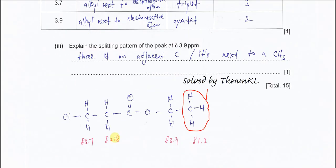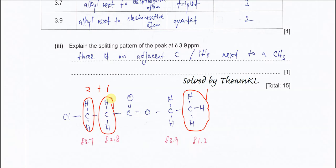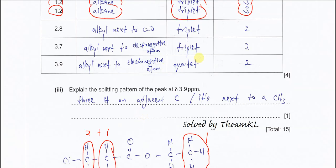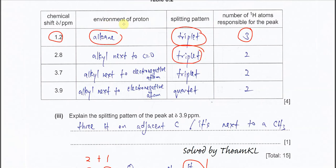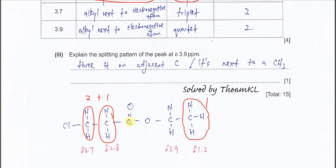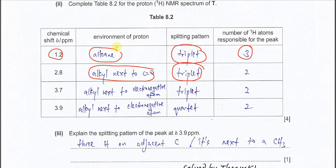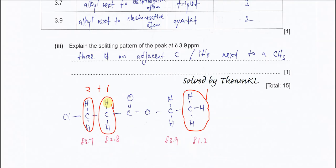For chemical shift 2.8 ppm, this corresponds to the CH2 next to the carbonyl group. This CH2 has an adjacent carbon with two protons, so it's 1+2, giving a triplet. The splitting pattern is a triplet. The environment of the proton is alkyl next to carbonyl. The number of hydrogens responsible for this peak is two.